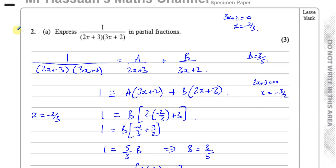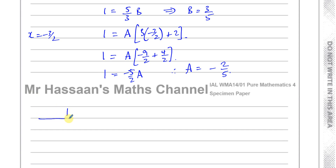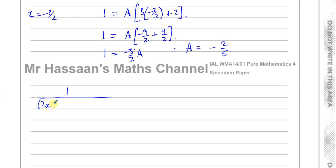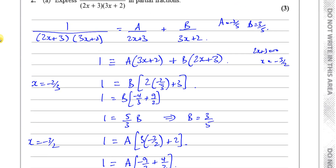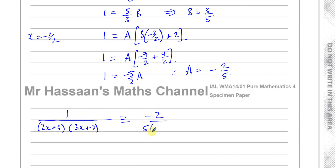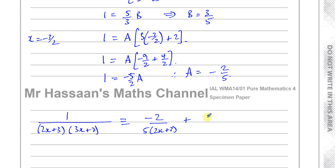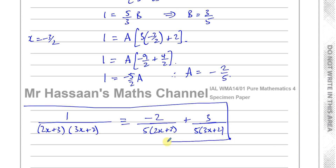So now we have A = −2/5 and B = 3/5. Therefore 1 over (2x + 3)(3x + 2) is identically equal to −2/[5(2x + 3)] plus 3/[5(3x + 2)]. That's our answer to part A — we have successfully split the fraction into a pair of partial fractions.